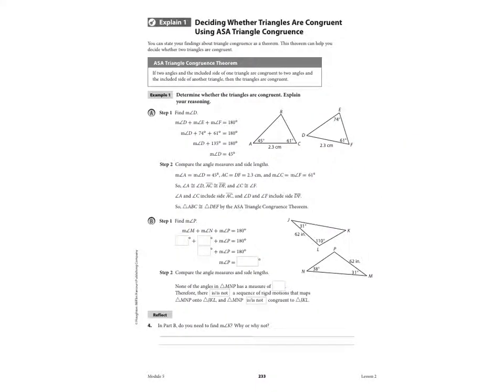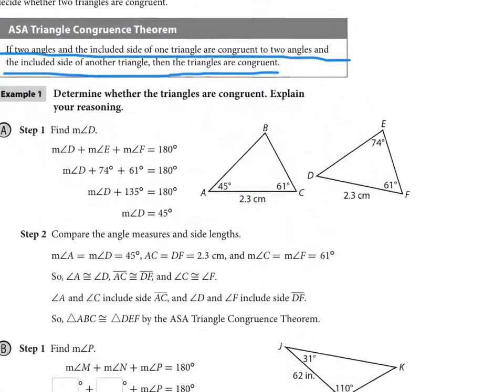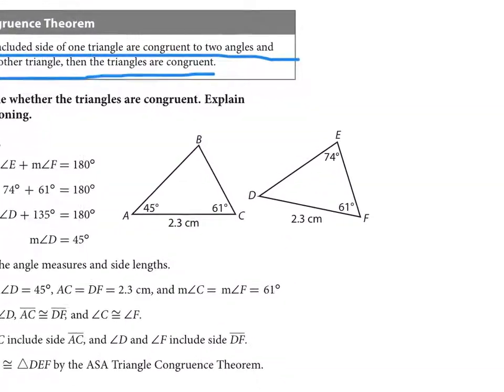Okay, so now on page 233, we are doing angle, side, angle. And right here, it talks about if two angles and the included side of one triangle are congruent to two angles and the included side of another, then the triangles are congruent.